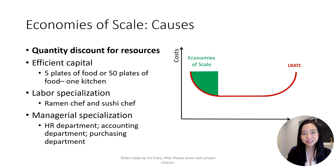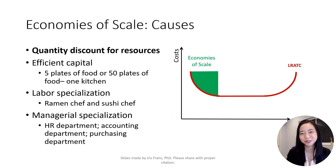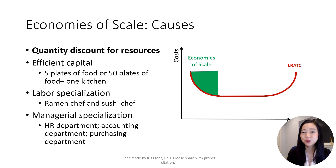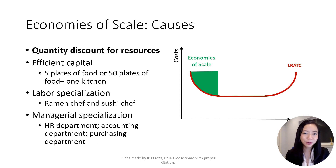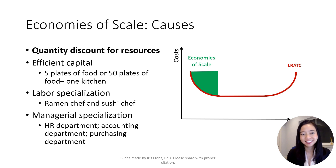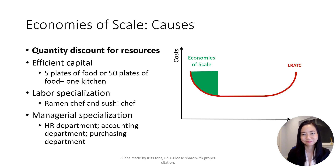Here are some causes of economies of scale. When the firm is expanding, it will start to purchase more resources and get a quantity discount. We experience this ourselves — when we buy in bulk at Costco, the unit cost is lower.